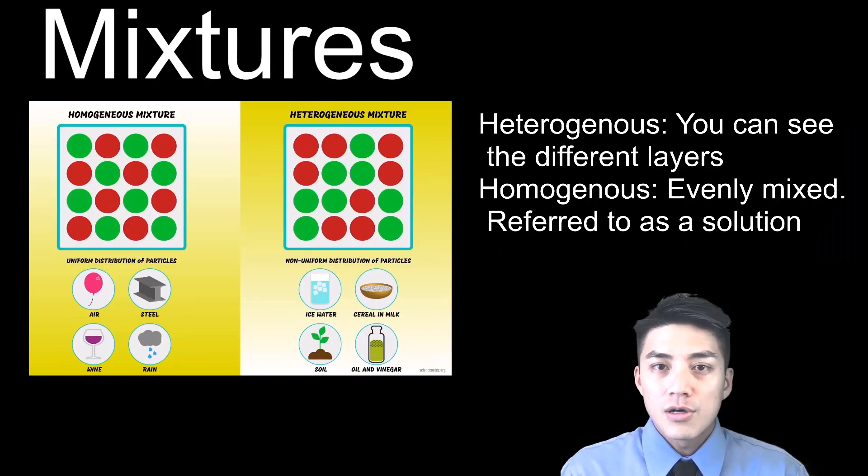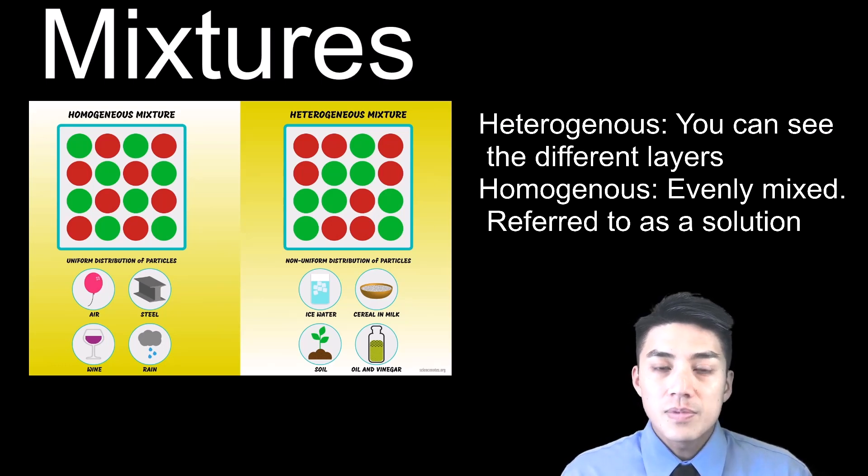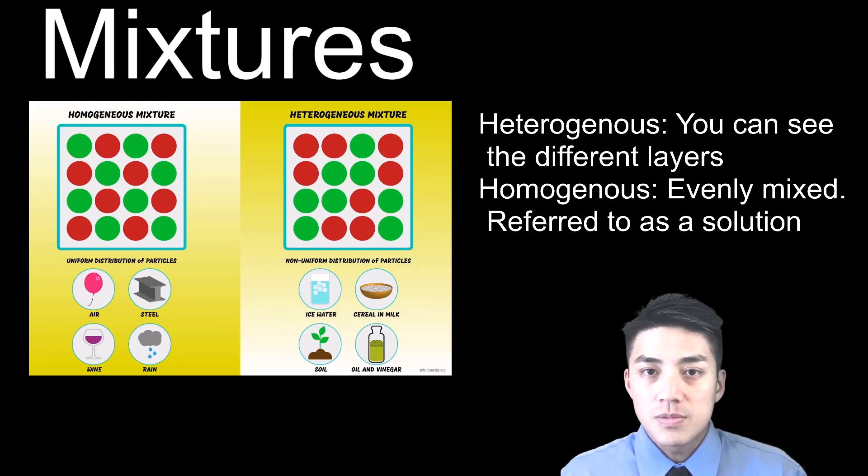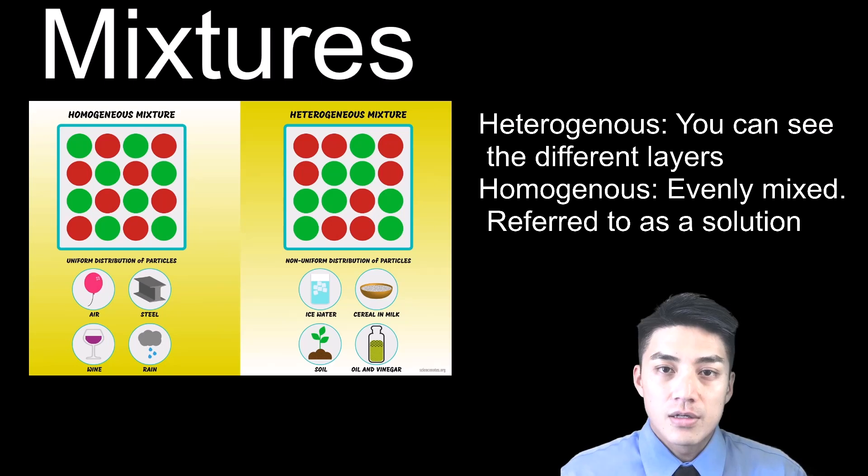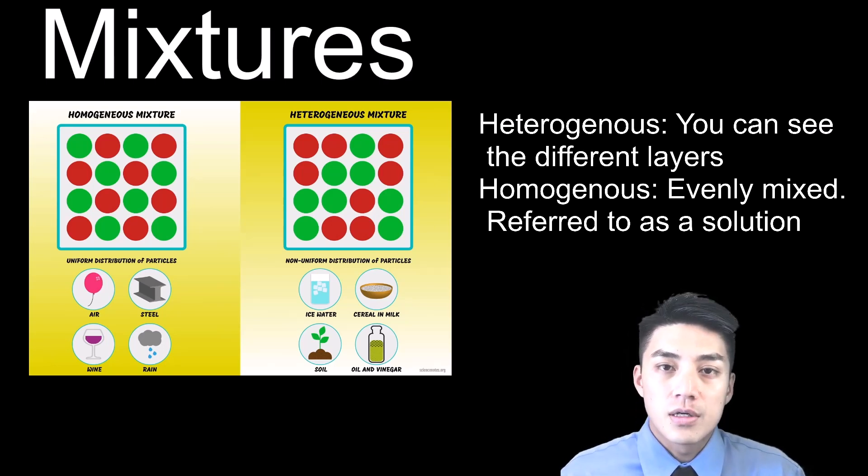As you start learning about physical and chemical changes and substances reacting and igniting and mixing with each other, you also have to understand a little bit about mixtures as well. There are two types of mixtures. You could have heterogeneous mixtures or you can have homogeneous mixtures. Hetero, the root hetero means different. So that means you could see all the different layers. So an example of a heterogeneous mixture would be like oil and water, or you can have a heterogeneous mixture of sand and water. You can see the different layers and the components just by looking at it.